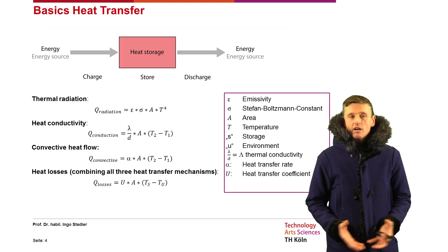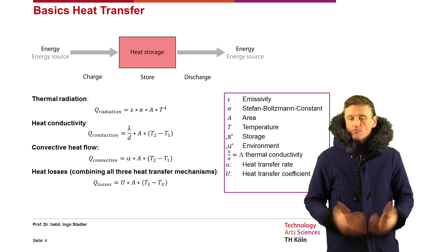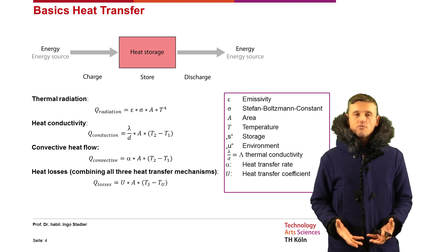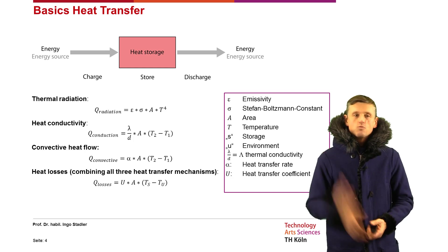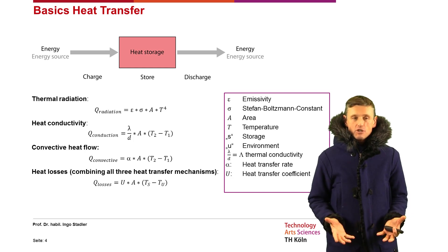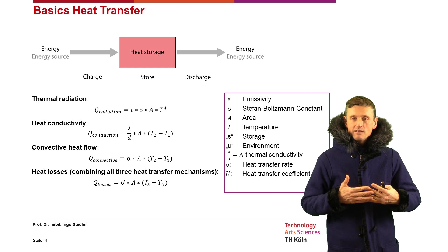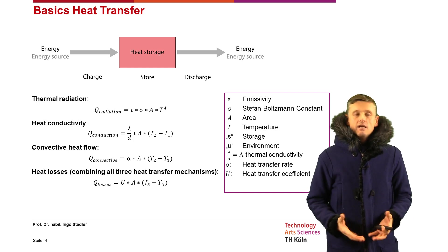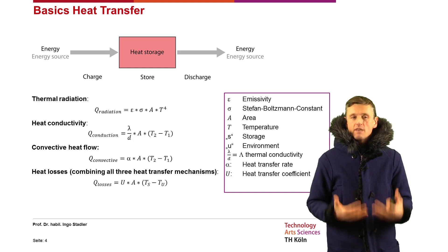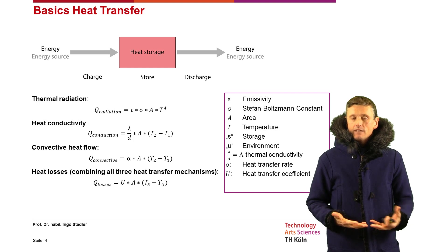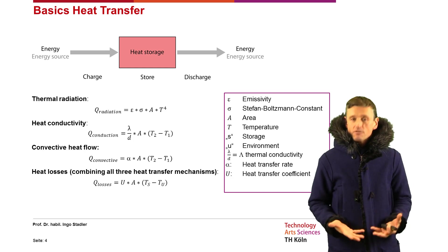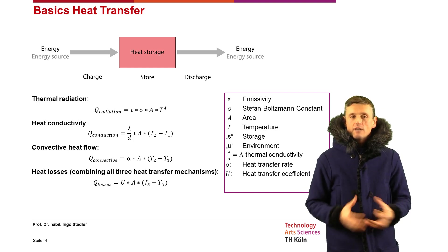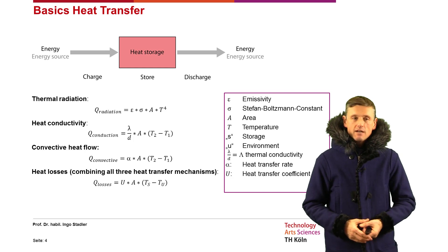When we talk about thermal energy storages, we need an overview of the basic heat transfer mechanisms — there are three different ones. The first is thermal radiation: a body radiates electromagnetic radiation proportional to its temperature to the power of 4. The emissivity of the body also plays a role, and this T⁴ relationship makes radiation quite dominant compared to the other heat transfer mechanisms.